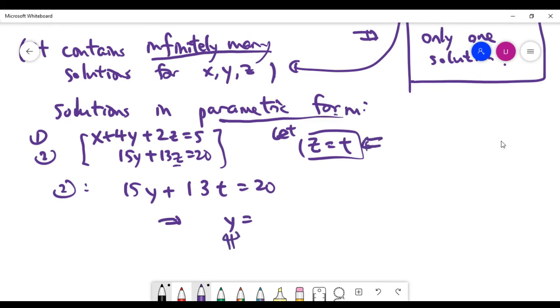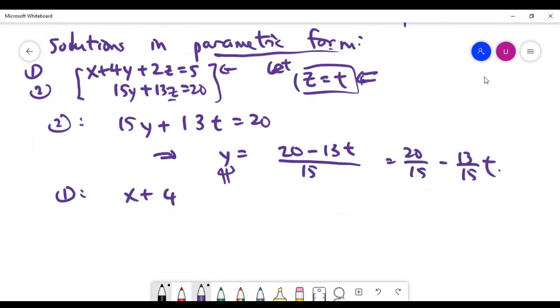So basically y is a function of t now. T is our parameter. Basically, y actually equals 20 minus 13t divided by 15. Or I can write in a slightly better way, in a slightly better way you actually have something like that. And for the x you can do something similar.